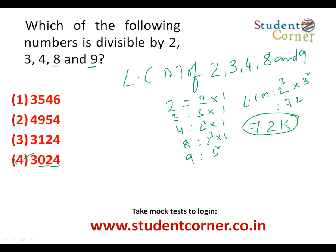Whatever k belongs to any natural number, substituting gives us 3024 as the answer. So this is the LCM rule method, and what I described before is the basic divisibility rules method.